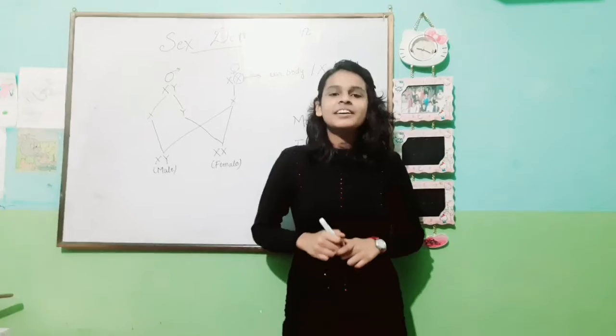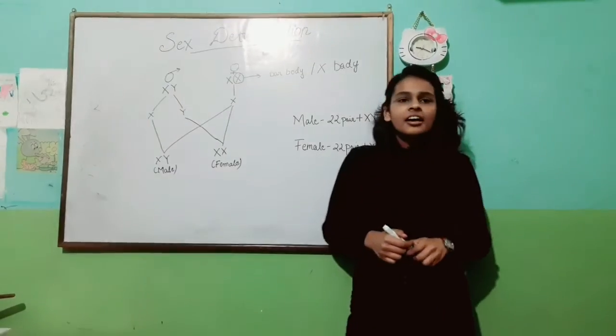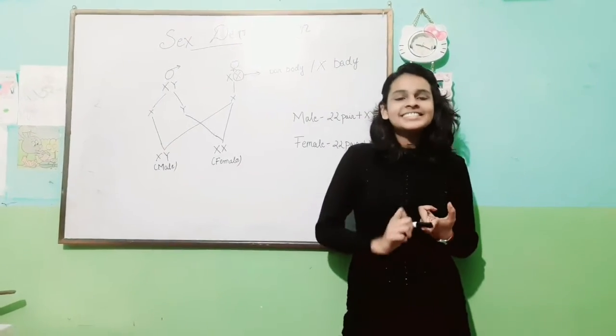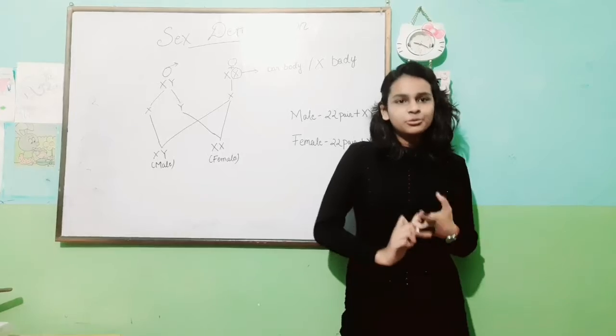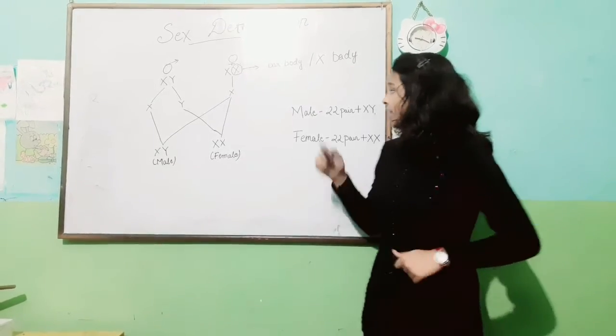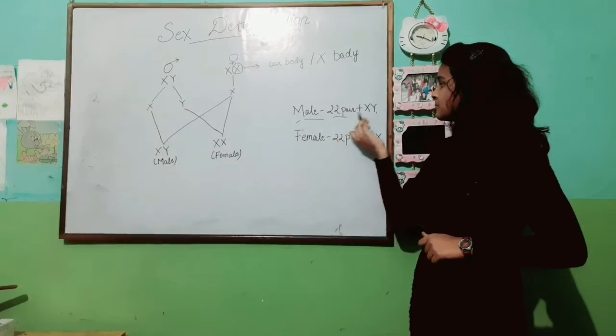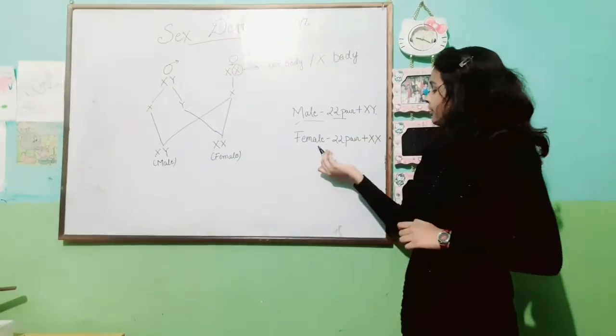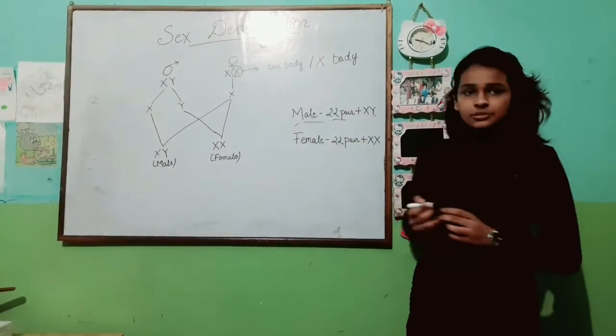Hello friends, today I am going to speak about sex determination. We know that humans have 23 pairs of chromosomes in each of their cells. Males have 22 pairs plus XY chromosomes, and females have 22 pairs plus XX chromosomes.